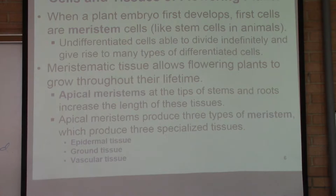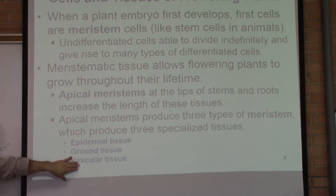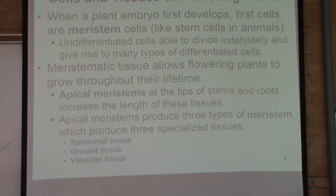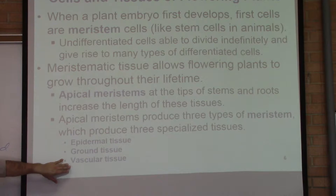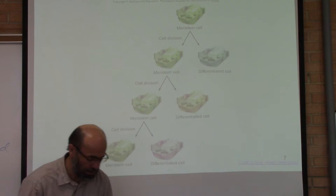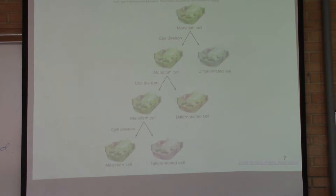Vascular tissues are for transport. In animals, there are two liquid transport systems — blood and lymph. In plants, the same work is done with vascular tissue, which is involved in transporting liquids as well as different chemicals. Meristematic cells, like stem cells, divide to produce their own kind and refresh themselves, while also producing more differentiated cell types such as epidermal, ground, or other cells inside the plant.